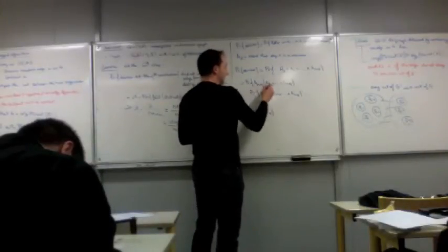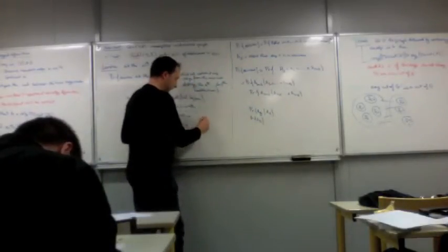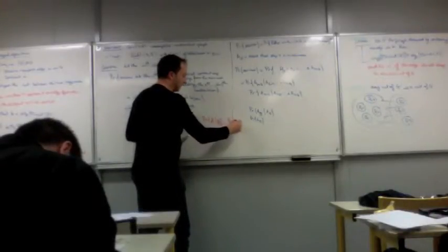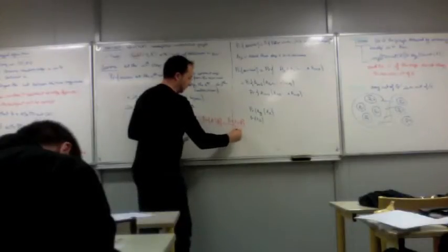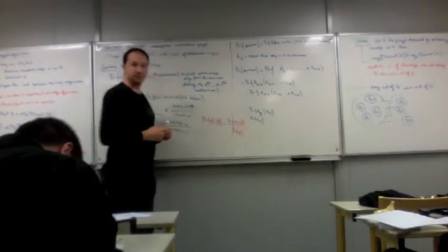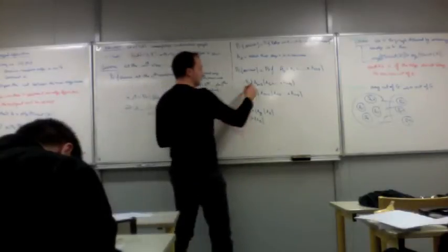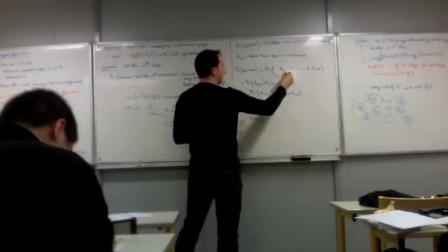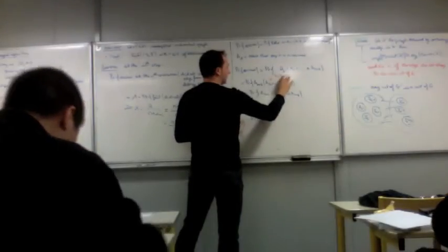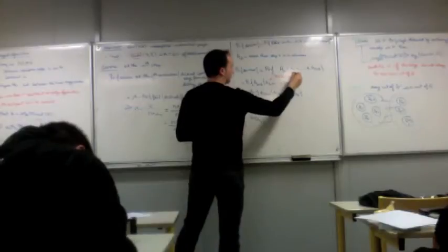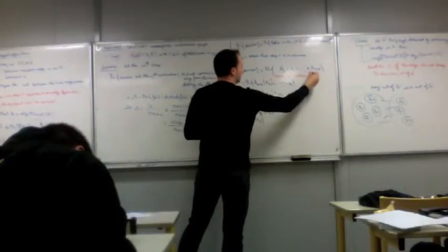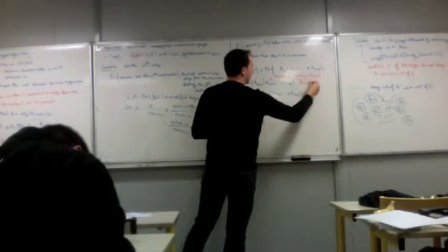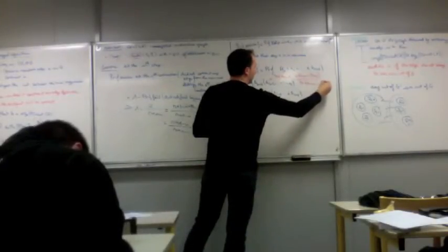Because this probability, the probability of A given B, is simply the probability of A and B over the probability of B. So if I look at this probability here, it's simply the probability of A n minus 3 and of A1 up to A n minus 4 and A n minus 3, divided by the probability of A1 and A n minus 4.